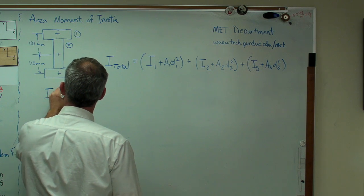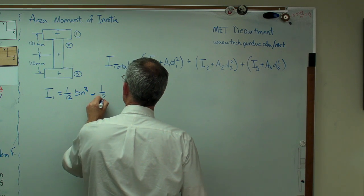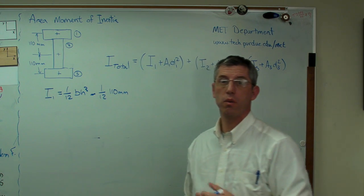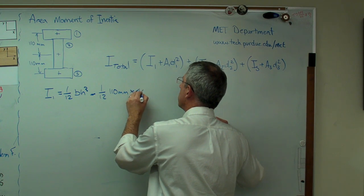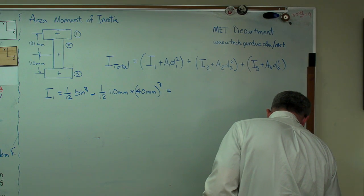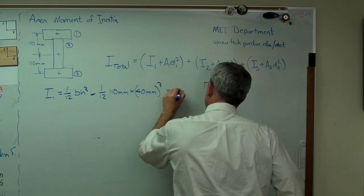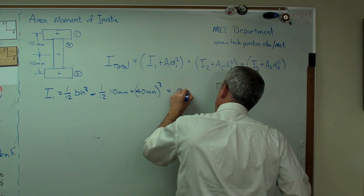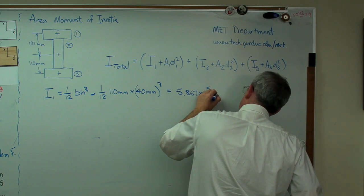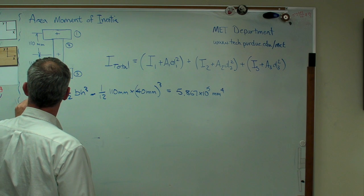We need to know I1. That's 1 over 12 base times height cubed. That's 1 over 12 times the base is 110 millimeters, and the height is 40 millimeters cubed. That works out to be 5.867 times 10 to the 5 millimeters to the 4th. That's I1. Turns out that's also I3.